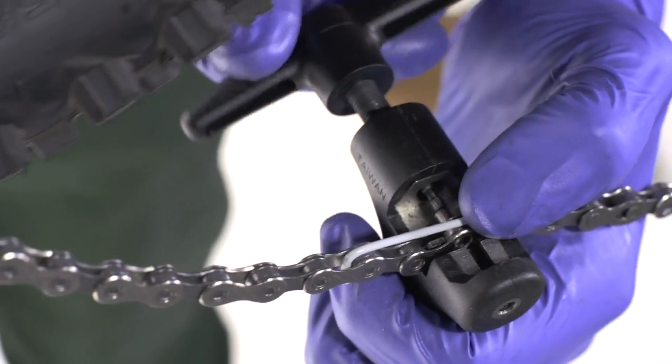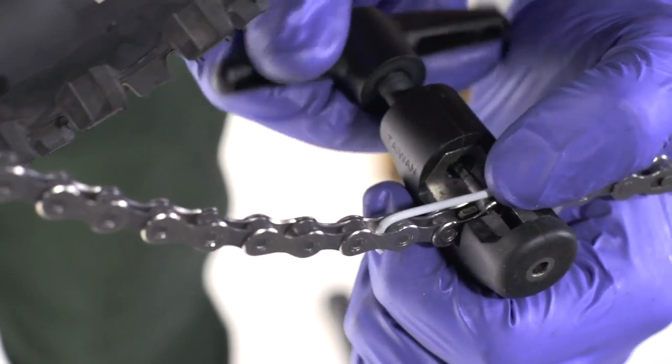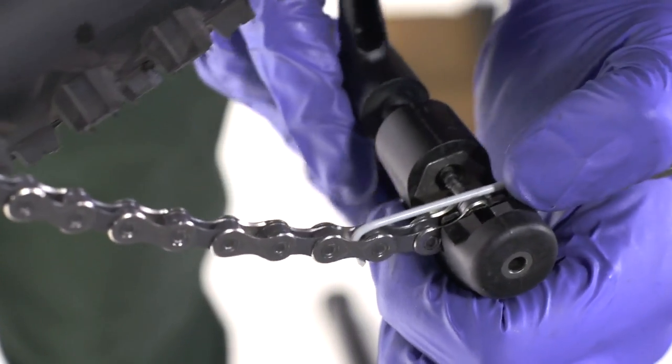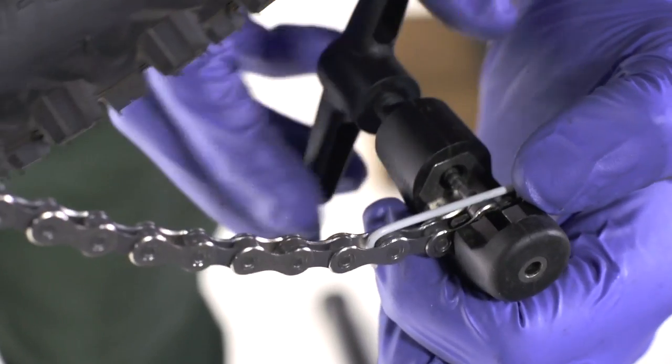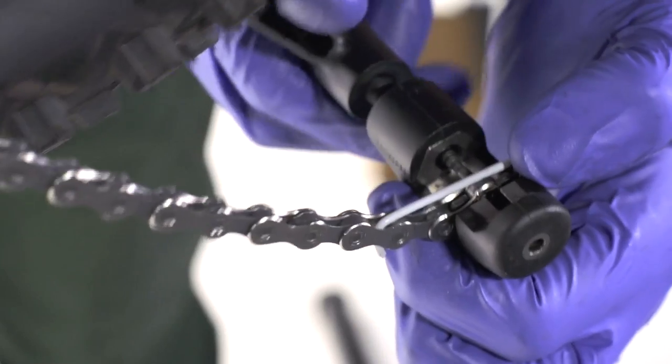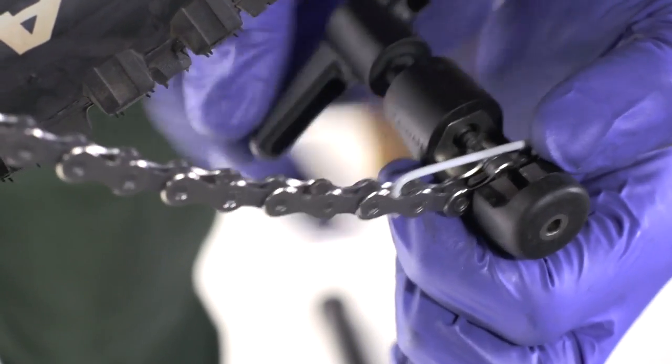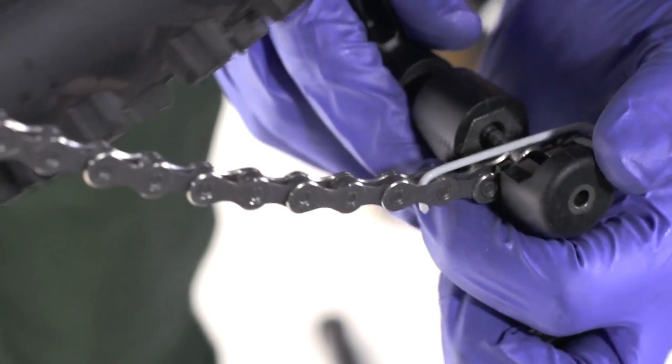So now we're going to push this pin in and just carefully start turning it. Make sure that it's going in straight. It's really easy for these ones to not go in straight and they don't have a guide pin built in. So you can do this with any chain whether it's a Shimano or a SRAM.